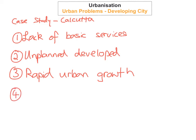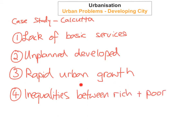The fourth problem with Calcutta is the inequalities between the rich and the poor. There are huge gaps between the standards of living of the rich and the poor people in Calcutta. This social gap is becoming wider every day, and it's going to lead to further problems for Calcutta down the line.